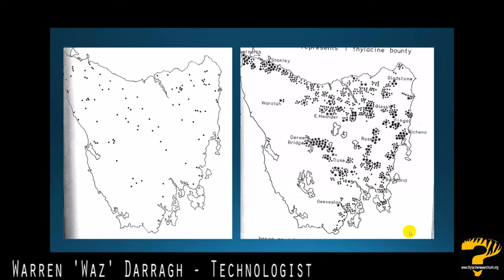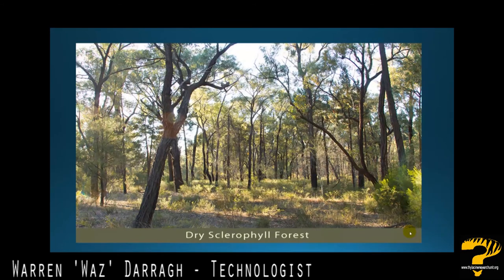So what does the sclerophyll forest actually look like — this quintessential thylacine territory? Here it is. You can see there's room to move, areas for the prey species to come in and graze, hide, and sleep beside trees, and also plenty of room for predators to come in. This kind of area bordering on open plains is where we should be investigating for potential thylacine activity.